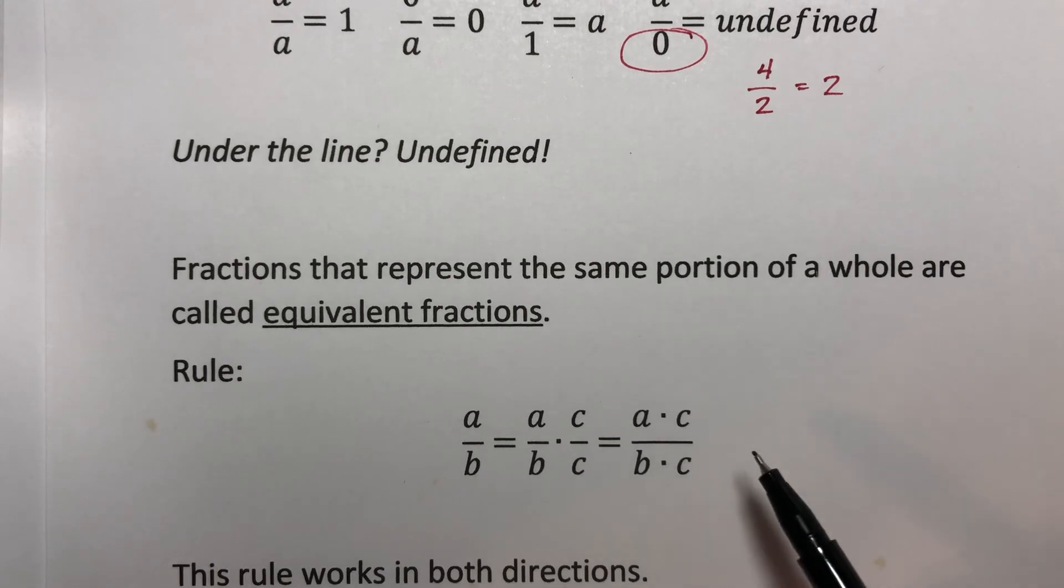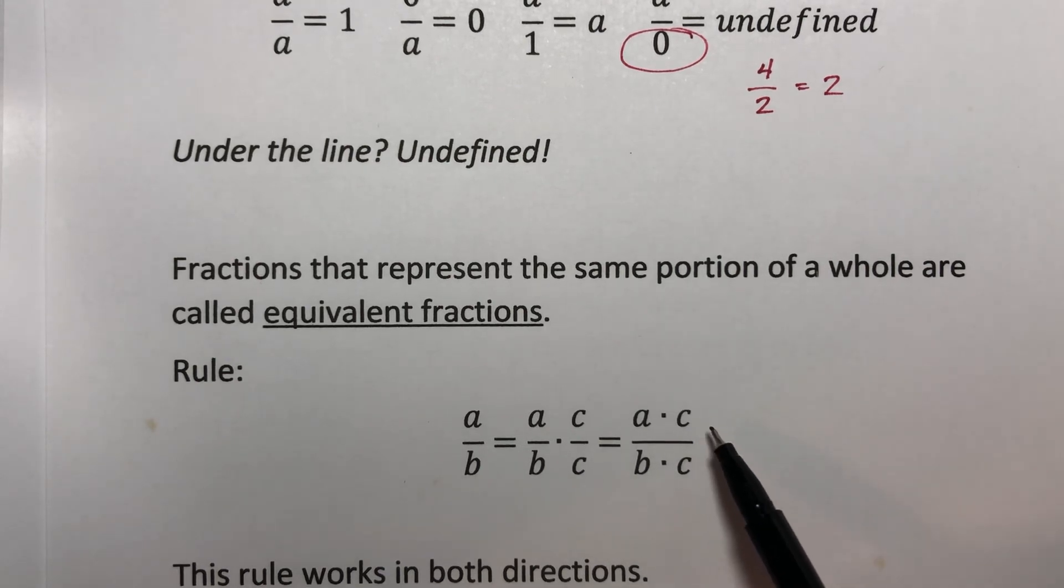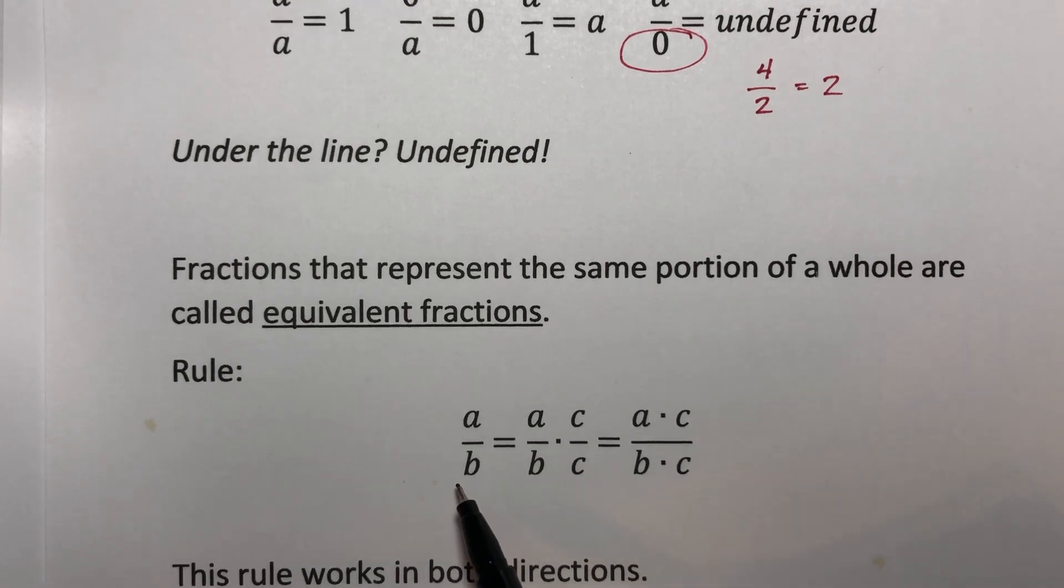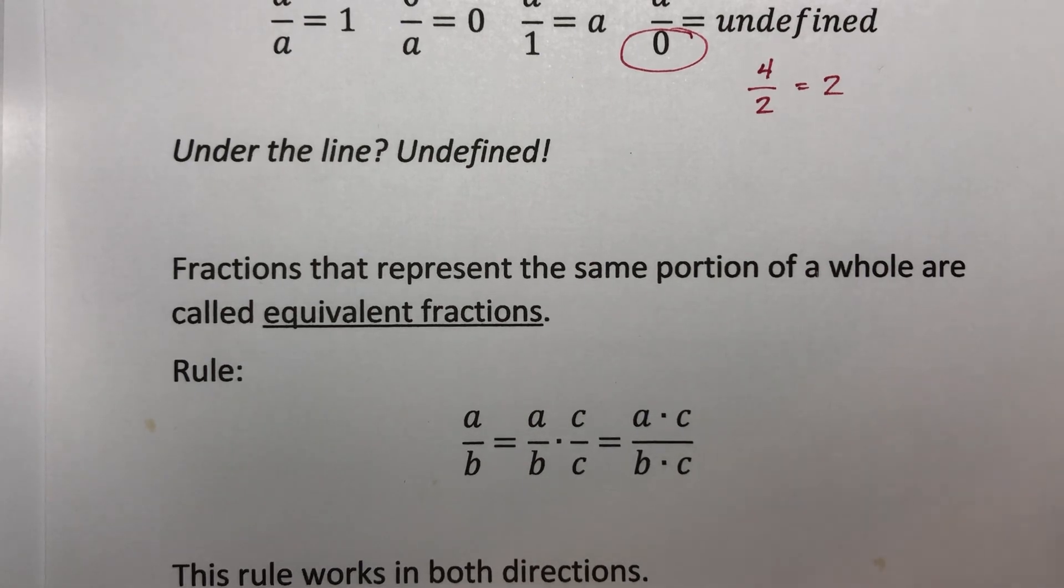We end up multiplying the top and the bottom by the same value. When I say this works in reverse, this means that I could start off with something like this and then essentially divide the C out because both of these are going to be divisible by C. We're going to get a lot of practice with this working in both directions. We're going to continue in the next video, part two.